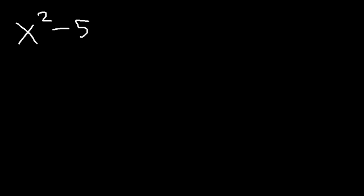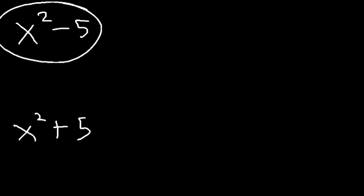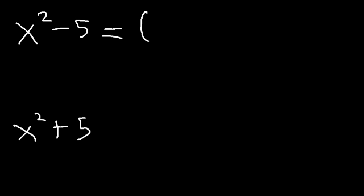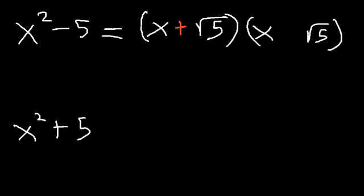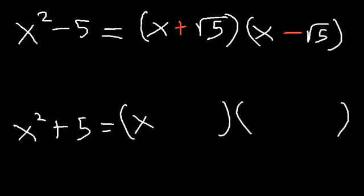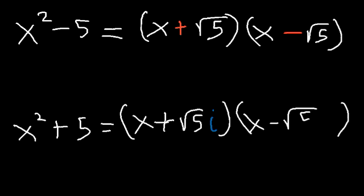So if you have a sum of squares you can factor it using imaginary numbers. What about x squared minus 5 and x squared plus 5? For x squared minus 5, since 5 is not a perfect square, we need to use square roots: the square root of 5 is simply radical 5. For x squared plus 5, it's similar but using imaginary numbers, giving x plus root 5 times i and x minus square root 5 times i.